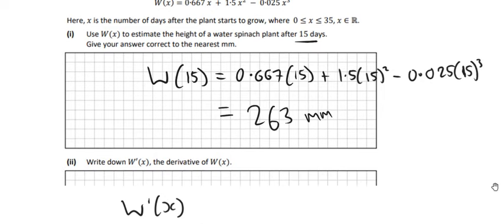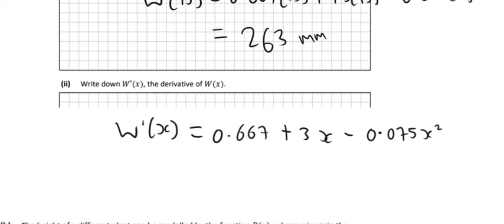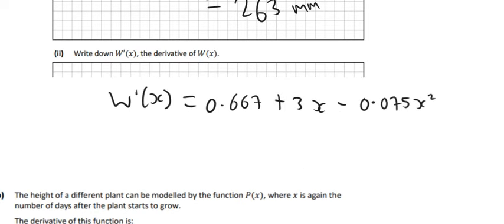The first bit will just be 0.667, plus then I need to do 2 times 1.5 so that would be 3x, and the power just reduces down by 1, minus then I have to do 3 times 0.025 so that would be 0.075 x squared. That's the derivative of W(x).